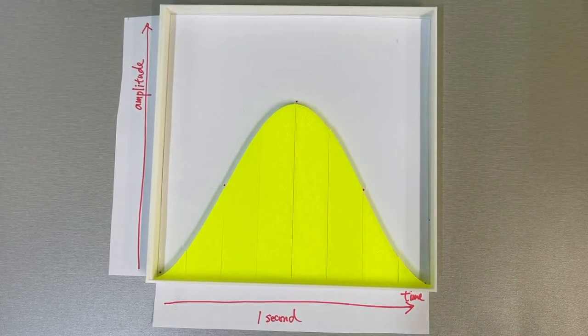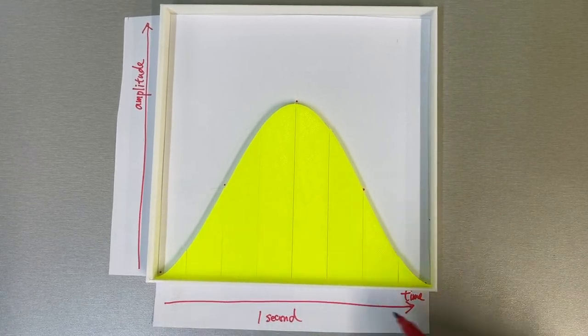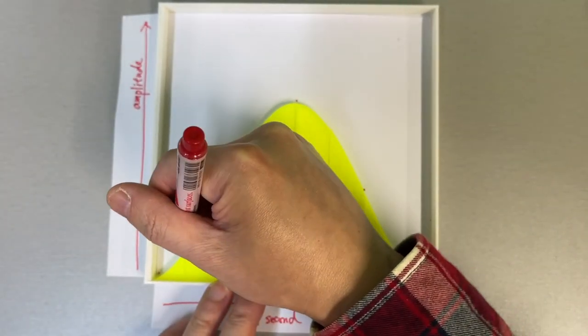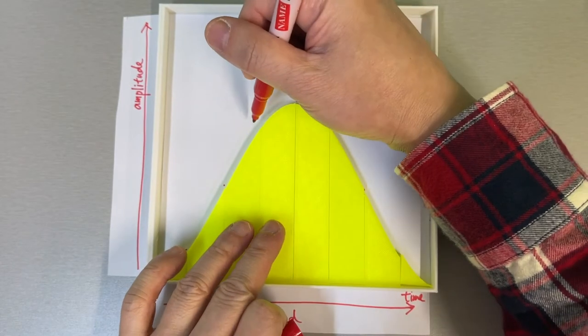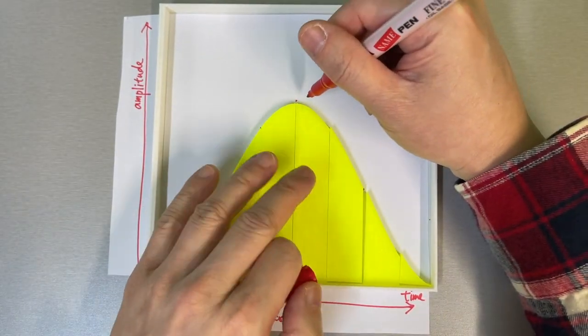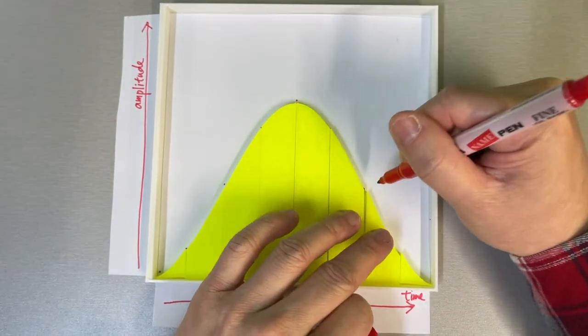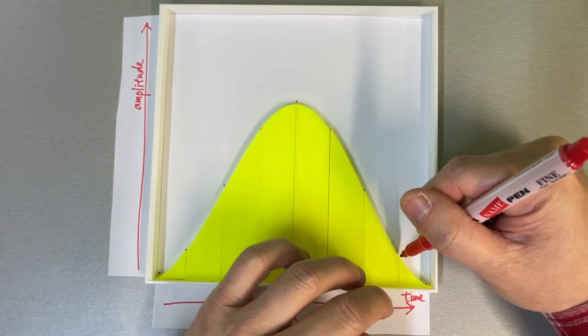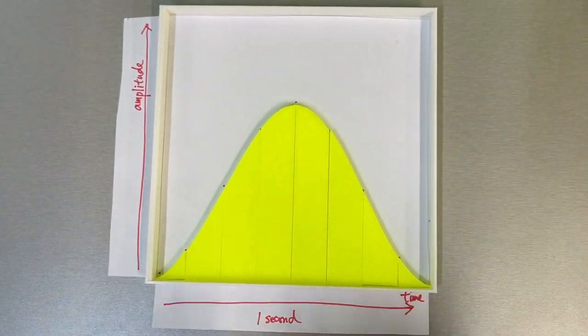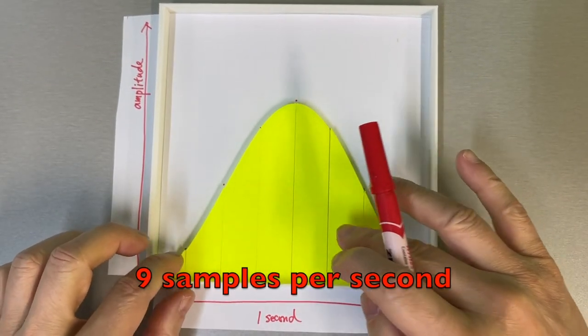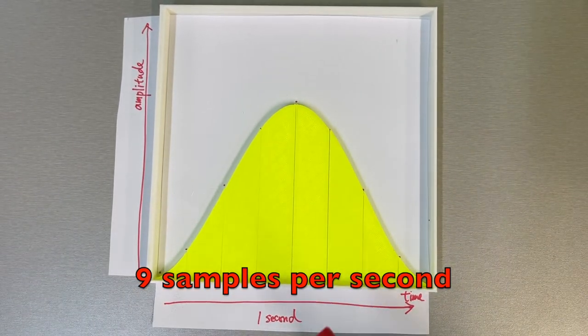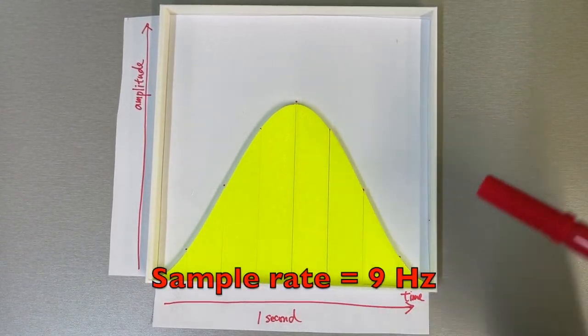Now suppose we increase the number of samples per second to 1, 2, 3, 4, 5, 6, 7, 8, and 9. Now we have 9 samples per second. That means the sampling rate is 9 Hz.